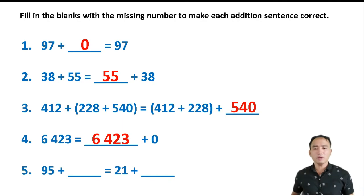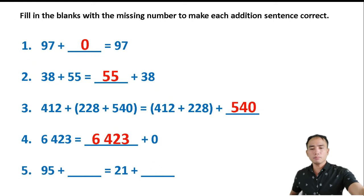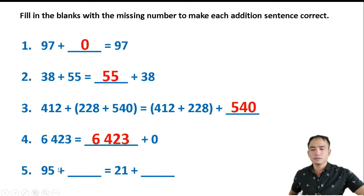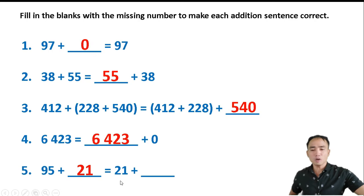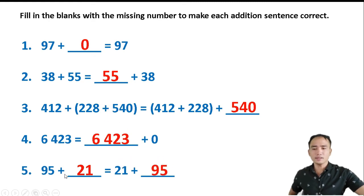Number 5: 95 plus blank equals 21 plus blank. Since this is about the Commutative Property of Addition, the first blank is 21 and the second blank is 95. The order of the numbers will not affect the answer.